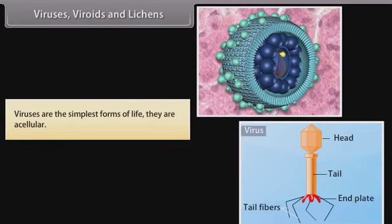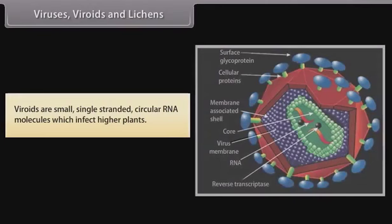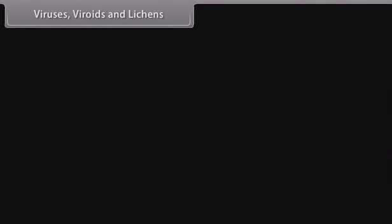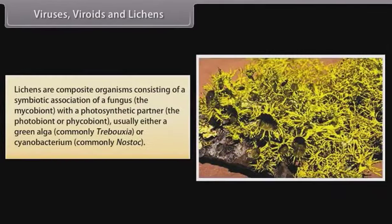Viruses are the simplest forms of life. They are acellular. Viroids are small single-stranded circular RNA molecules which infect higher plants. Lichens are composite organisms consisting of a symbiotic association of a fungus — the mycobiont — with a photosynthetic partner, the photobiont or phycobiont, usually either a green algae, commonly Trebouxia, or a cyanobacterium, commonly Nostoc.